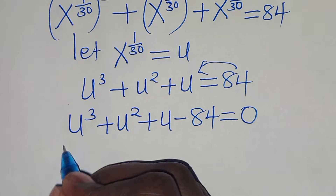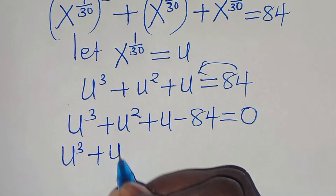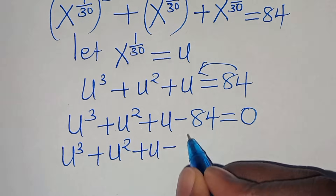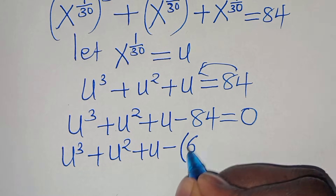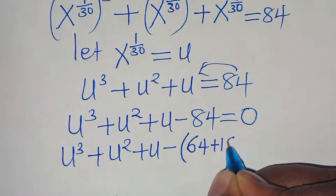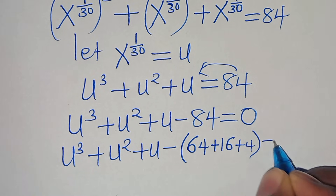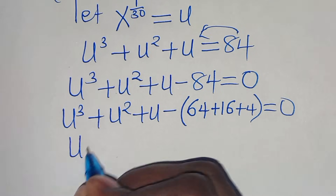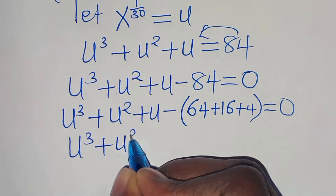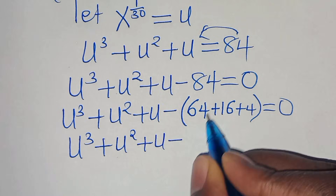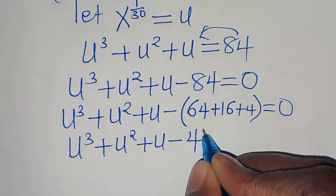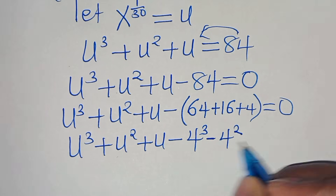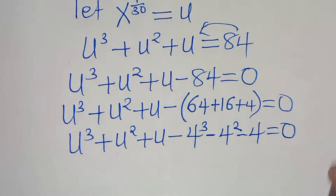Moving 84 to the left-hand side: u cubed plus u squared plus u minus 84 equals 0. Now 84 can be expressed as 64 plus 16 plus 4, so we rewrite this as u cubed plus u squared plus u minus 4 cubed minus 4 squared minus 4, equal to 0.